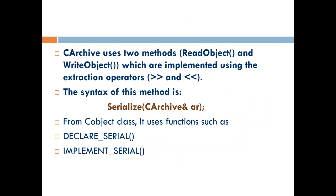To implement serialization, we use two methods: read object and write object. Write object will write the CArchive file, serialize it, and produce a file. Read object will read the file and convert it back to an object. These two operators are used for read and write. The serialize method takes CArchive and converts it to a file. In the process of serialization, you first declare serial and then implement serial — these two functions are also executed.